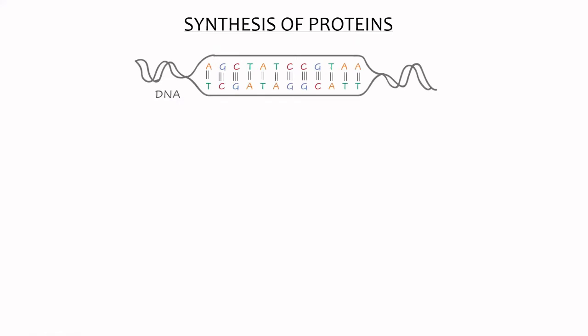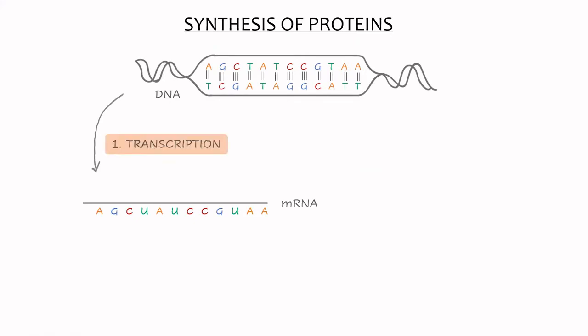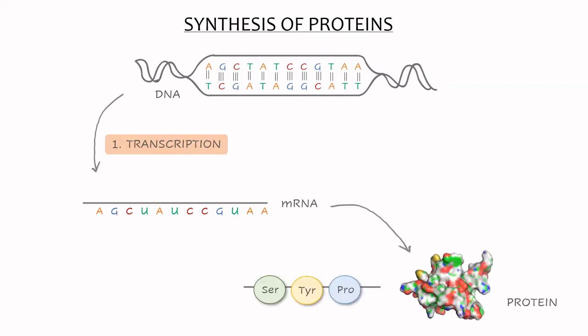The first block is where we transfer the information from the DNA to a messenger RNA, and this is called the transcription process. The second block of the central dogma is where we transfer the information from the RNA to a protein, and this is called the translation.